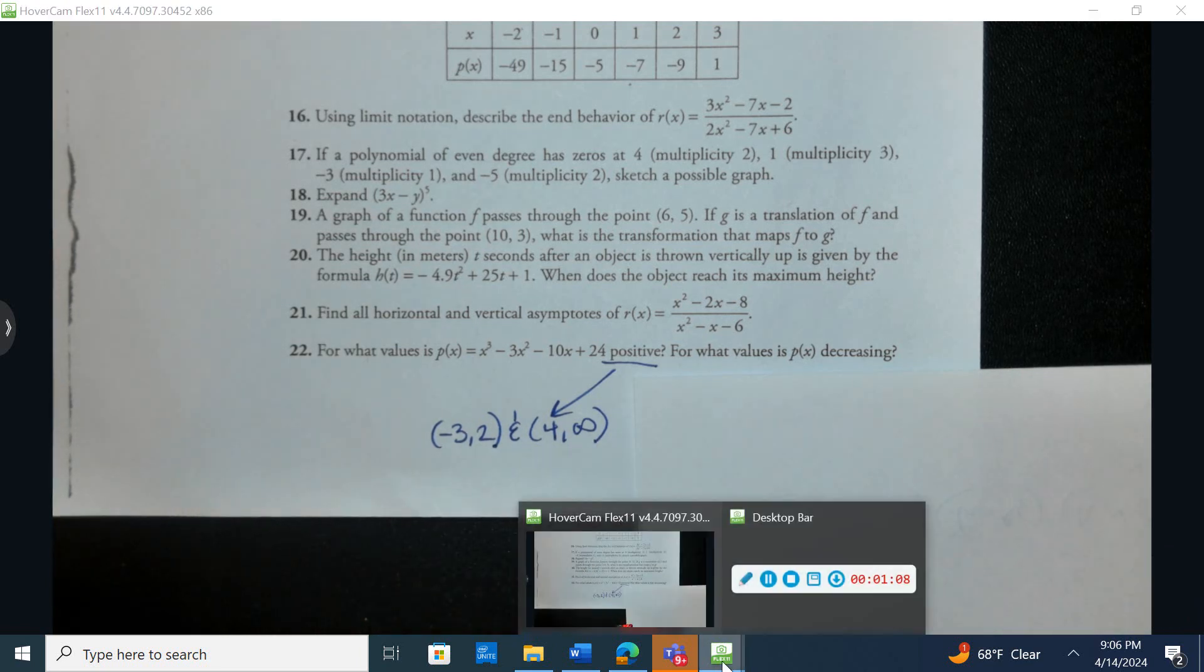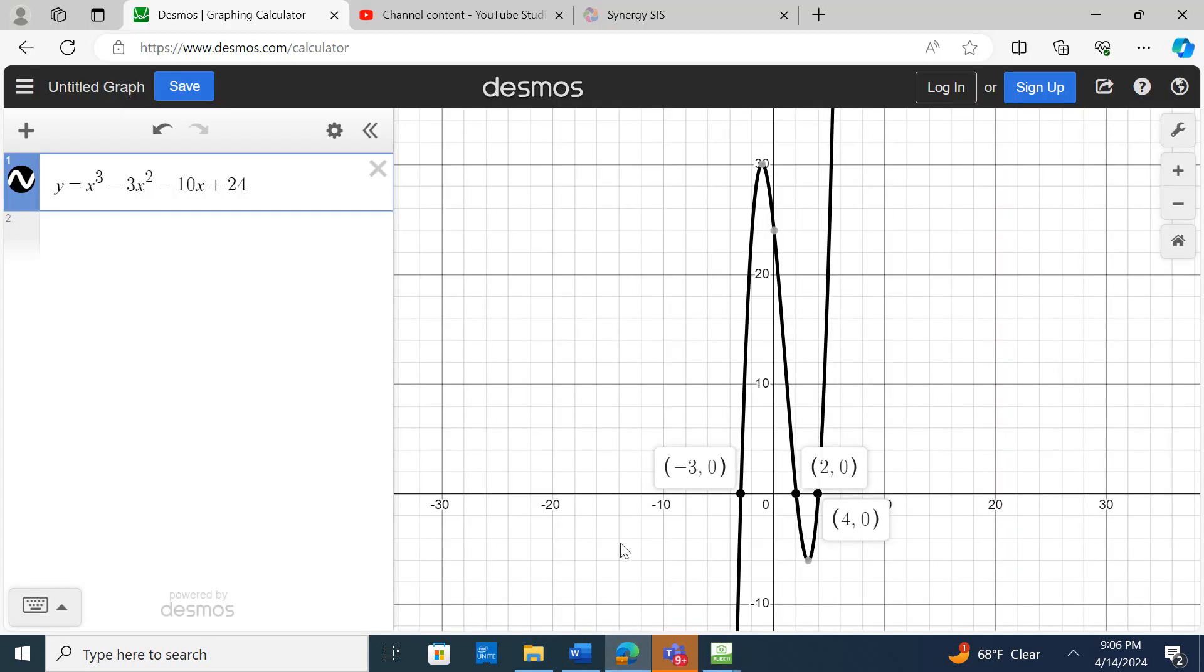Now, where is it decreasing? Whenever we describe increasing, decreasing, or constant, we are going to use parentheses. And so I need to describe it in terms of x values. So let me click off these so there's no confusion. On your graphing calculator, you're going to find what is the maximum and the minimum.